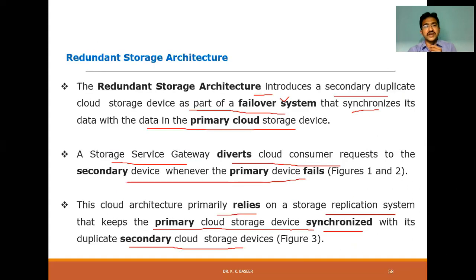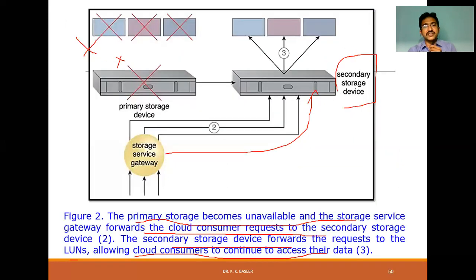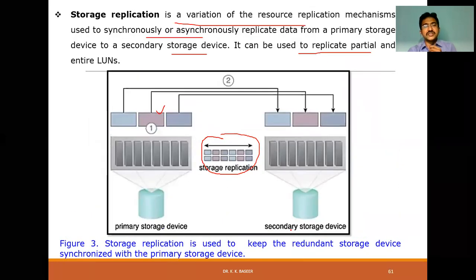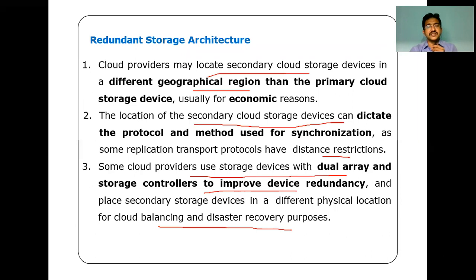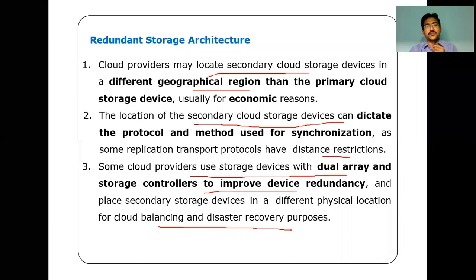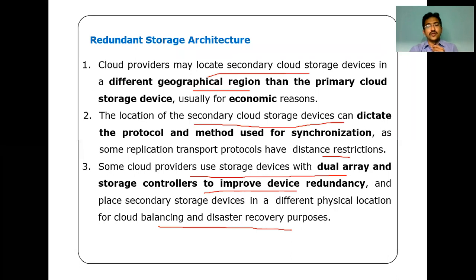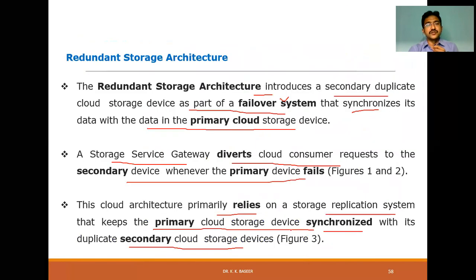To summarize Redundant Storage Architecture: we identified the problem, provided the solution using LUNs and the Storage Service Gateway, and saw graphical representations of the failover process. Storage replication plays a vital role in making replicas. Key points: secondary storage is placed in different geographical regions for economic benefit, protocols must be chosen considering distance restrictions, and dual array storage controls improve redundancy.